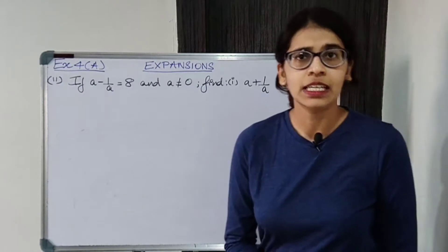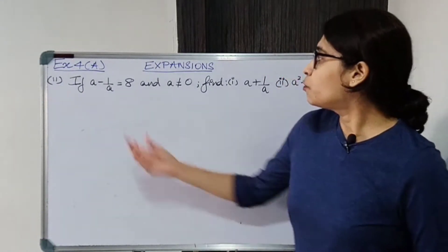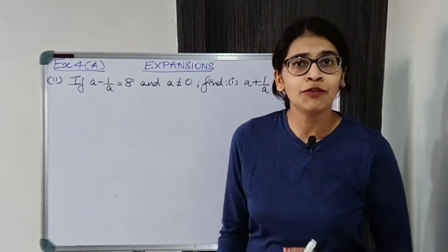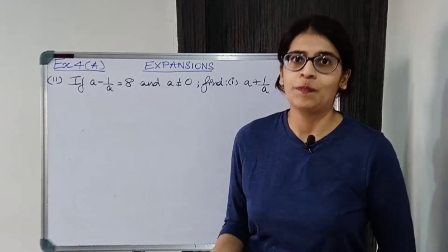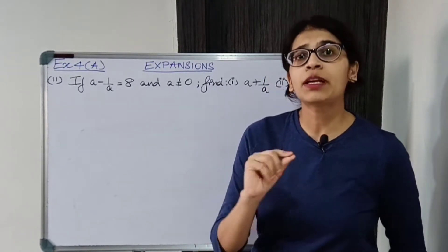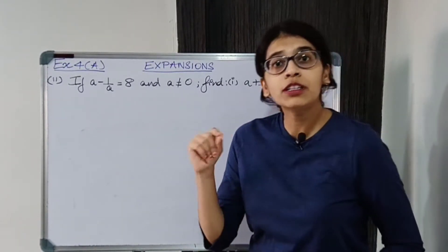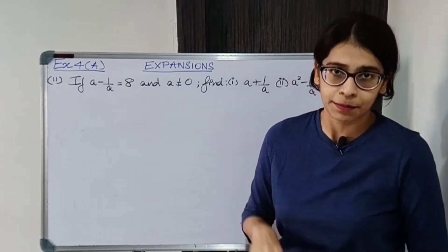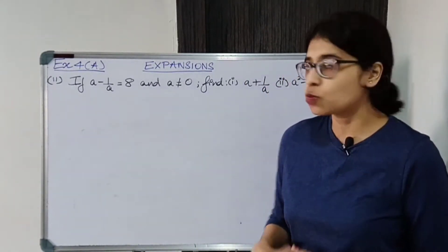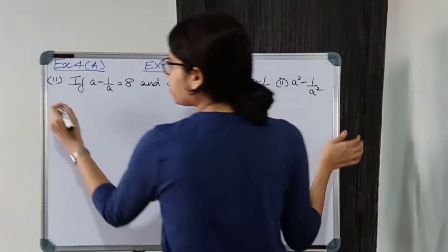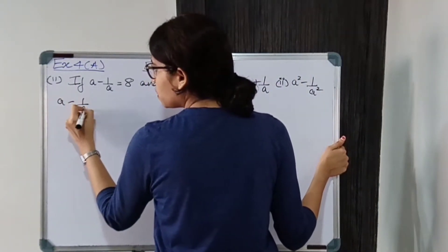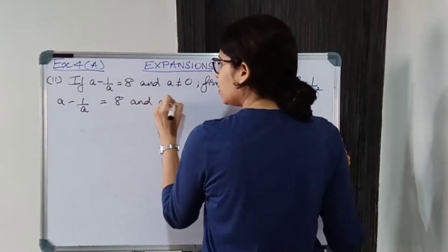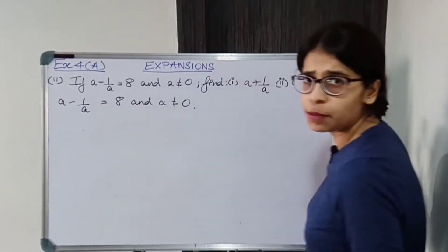This is very easy. We are given A minus 1 upon A. Do we know any identity for A minus 1 upon A? No, but we do have an identity for A minus 1 upon A, the whole square. So what we will do, we will square it. We are given A minus 1 upon A is equal to 8 and A is not equal to 0. This is very, very important.